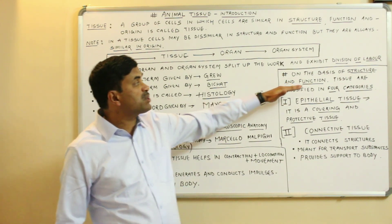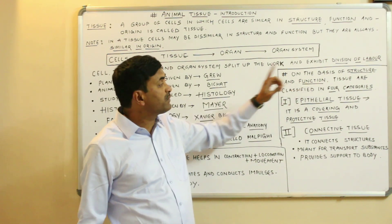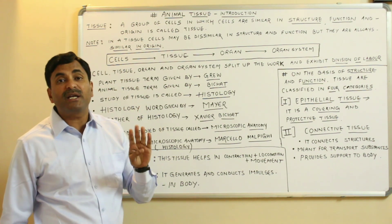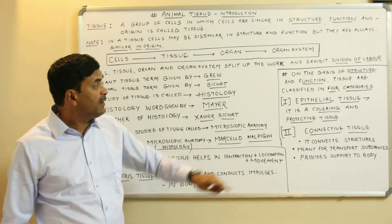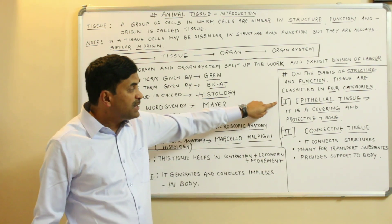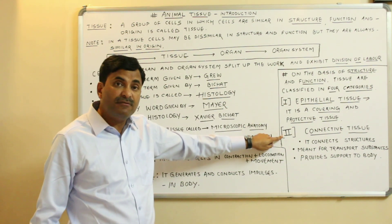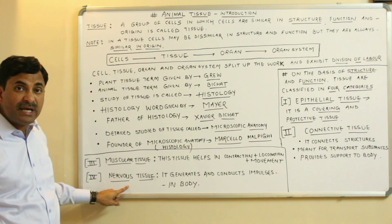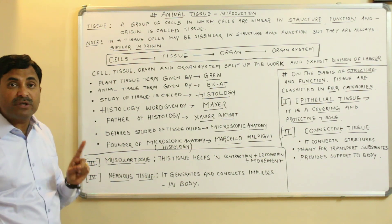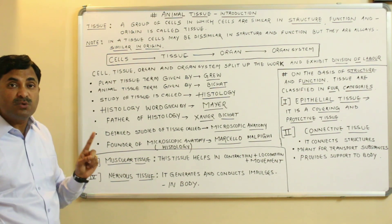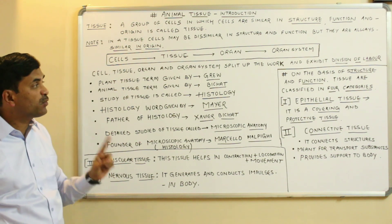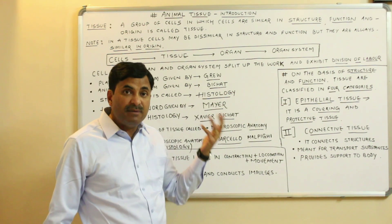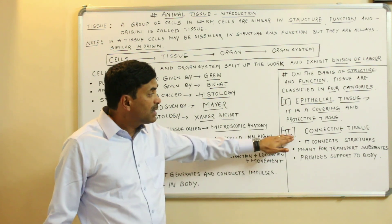On the basis of structure and function, animal tissue can be classified into four categories: epithelial tissue, connective tissue, muscular tissue, and nervous tissue.